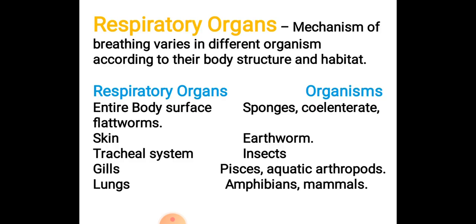Welcome to biology class. In this lecture we will be discussing the different types of respiratory organs present in different organisms. The mechanism of breathing varies in different organisms according to their body structure and habitat. Different organisms from porifera to chordata have diverse respiratory organs which depend on body structure and habitat.